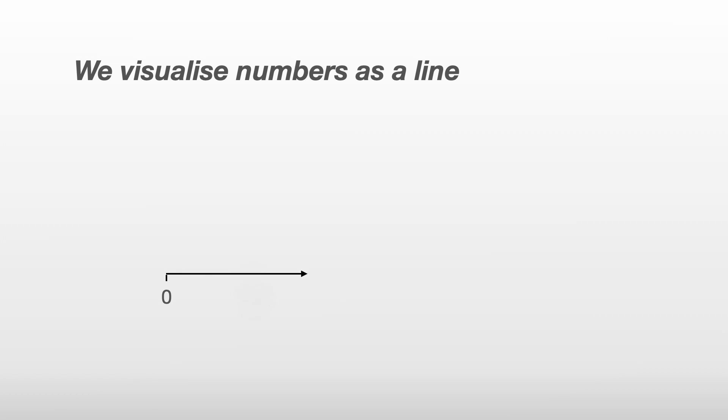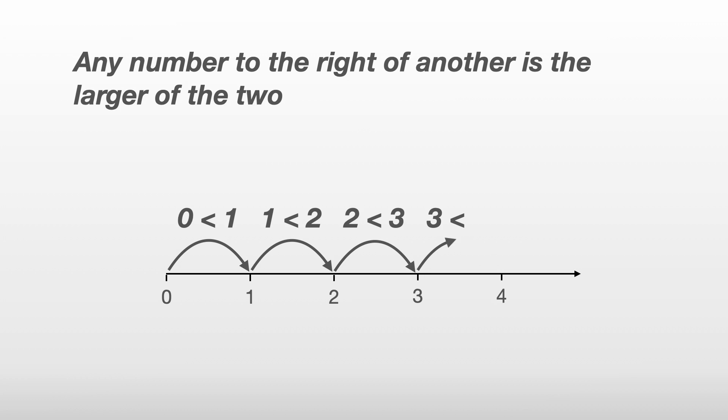The fact that we can compare any two numbers means we can place all the numbers on a line with smaller numbers to the left and larger numbers to the right. Consequently, any number to the right of another must be the larger of the two.